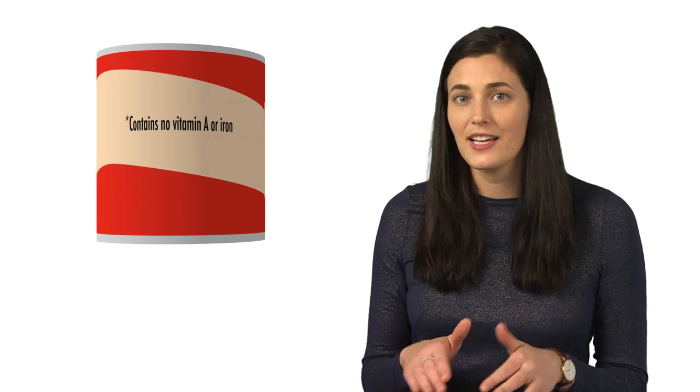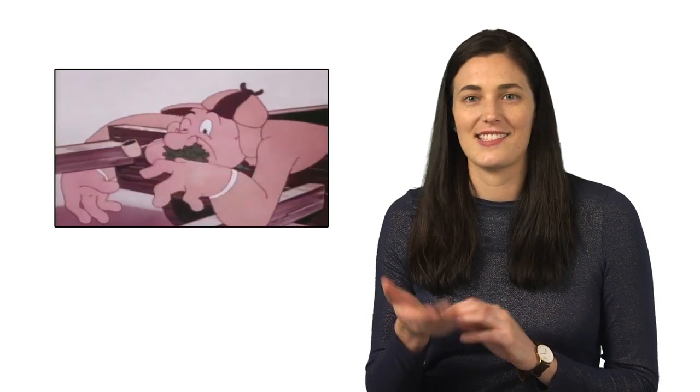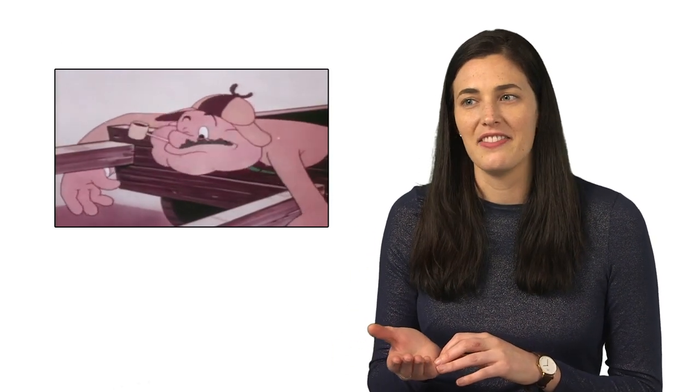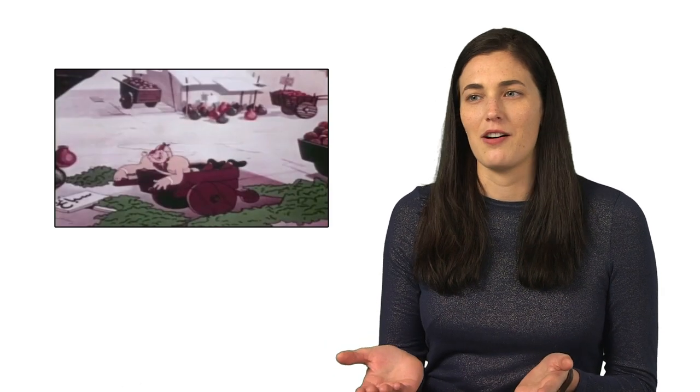And so that had nothing to do with vitamin A or iron. It actually had to do with a hormone that's found in spinach extract that helps you build muscle mass. Popeye was not taking spinach extract. He was just eating an insane amount of spinach, and that definitely would not have made him hulk out.